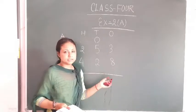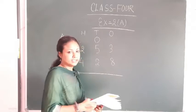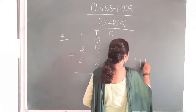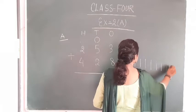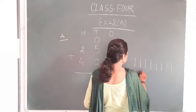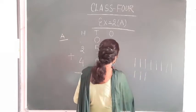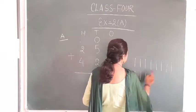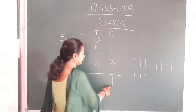So how should we add these? First of all, what is 8 plus 3? We draw 8 lines: 1, 2, 3, 4, 5, 6, 7, 8. Then plus 3: 1, 2, 3. How many total numbers are there? 1, 2, 3, 4, 5, 6, 7, 8, 9, 10, 11. This is 11. Then 11.